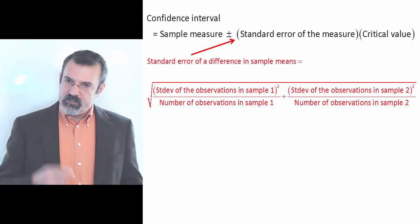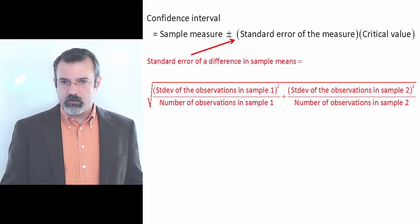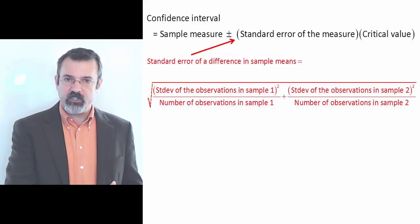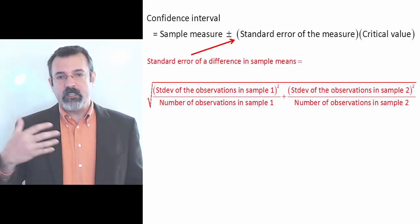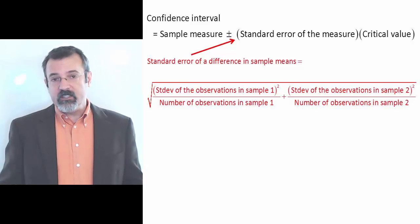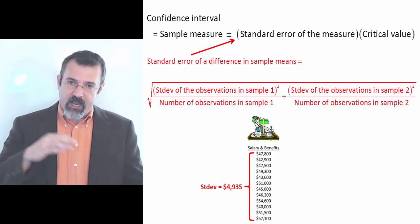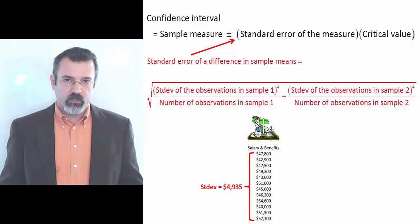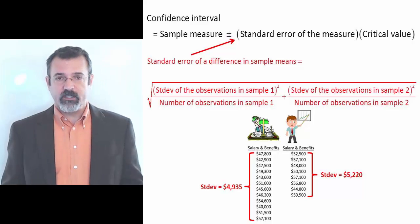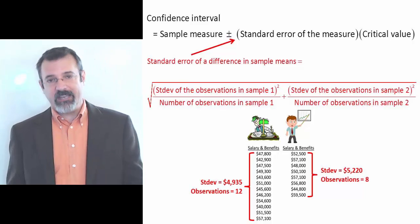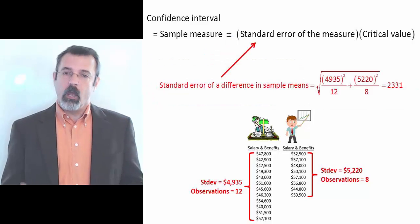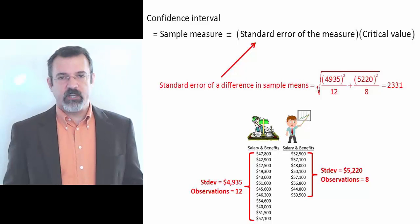The standard error of a difference in sample means is the square root of the standard deviation of one sample squared divided by the number of observations in that sample, plus the standard deviation of the other sample squared divided by the number of observations in that sample. The standard deviation of the accountants' salaries is $4,935, the standard deviation of the financial analysts' salaries is $5,220, with 12 and 8 observations respectively. This gives us a standard error of the difference in sample means of $2,331.